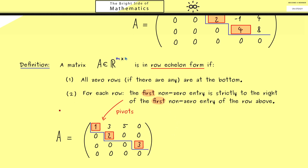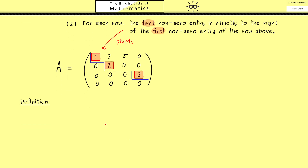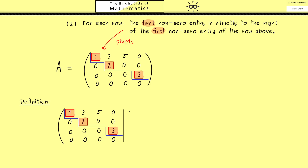Now we are ready to discuss two important definitions about the variables — the unknowns — that occur in a system of linear equations. We have the same matrix but now with a right-hand side. Each row of this augmented matrix represents one linear equation with 4 variables, and for each column we have a different variable, usually called x1, x2, and so on. We want to give these variables special names depending on whether pivots occur in their column or not. Variables with no pivot in their respective columns are called the free variables of the system.